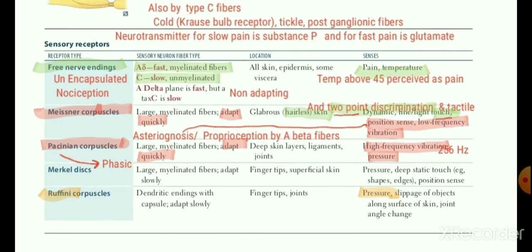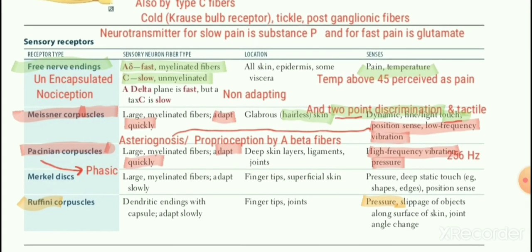The other two specialized receptors are adaptable because they are not free nerve endings and have mechanisms for adaptation. They respond to frequency and vibration. Meissner corpuscles are for low frequency, and Pacinian corpuscles are for high frequency — specifically 256 Hz and above. Scenarios with frequency will be given: below 256 Hz is low frequency (Meissner), at or above 256 Hz is high frequency (Pacinian).